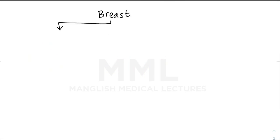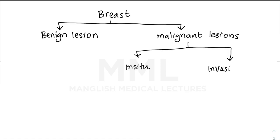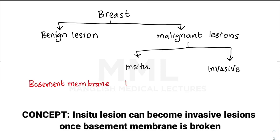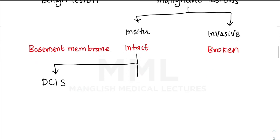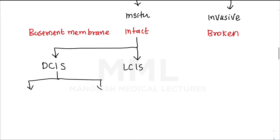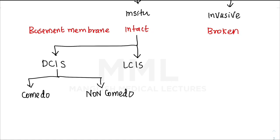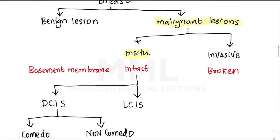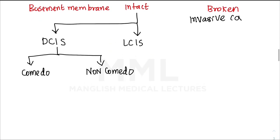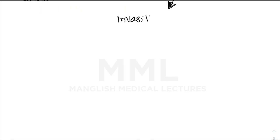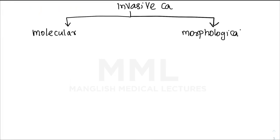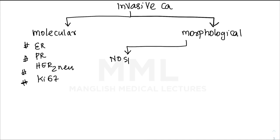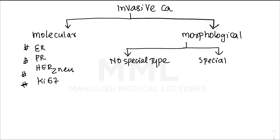Now let's visualize the classification. The breast can have benign or malignant lesions. Malignant lesions are divided into in-situ and invasive lesions based on whether the basement membrane is intact. In-situ lesions include ductal carcinoma in-situ (DCIS) and lobular carcinoma in-situ (LCIS). DCIS is further divided into comedo-type and non-comedo-type. Invasive carcinomas can be classified molecularly — based on receptor expression — or morphologically. Under molecular classification, we have ER/PR-positive cancers and triple negative breast cancer (TNBC).